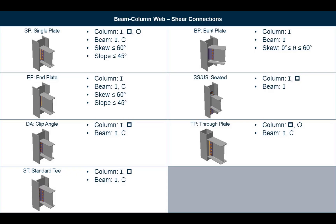In RAM Structural System, all gravity steel beams support gravity loads only, such as dead load and live load, and they are assumed to be simply supported, which means they will require a connection capable of resisting shear forces. If we review the RAM Connections database, we would see that there are several shear connections available for beam-column web joints for a variety of different joint data configurations. Not all connectors may be available for each design code, and the RAM Connection help manual will detail which connectors are available for each design code.